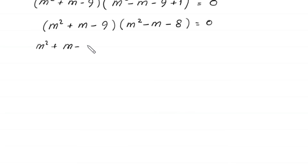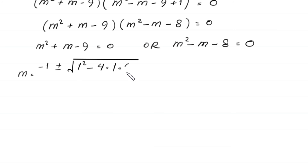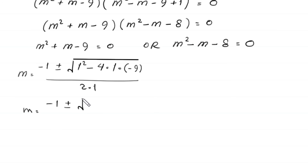From here, either m squared plus m minus 9 equals 0, or m squared minus m minus 8 equals 0. From the first equation, using the quadratic formula: m equals negative 1 plus or minus the square root of (1 squared minus 4 times 1 times negative 9) all divided by 2, which gives m equals negative 1 plus or minus the square root of 37, all divided by 2.